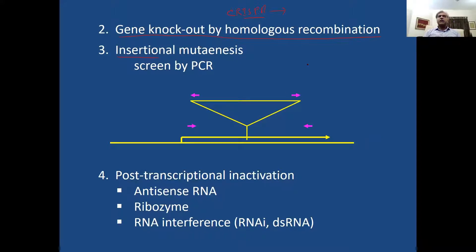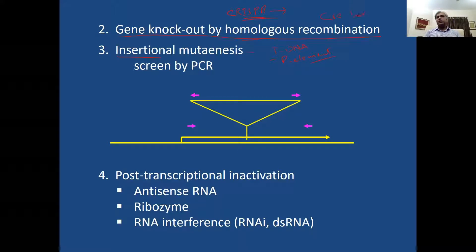Insertional mutagenesis can also be carried out. In Arabidopsis there are T-DNA lines, and in flies there are P-element lines. You can do inverse PCR to find what kind of insertion they carry. These methods include homologous recombination using the Cre-lox system, but nowadays using CRISPR you can knock out a specific gene of interest much more efficiently and rapidly compared to the Cre-lox system, which used to take a lot of time.